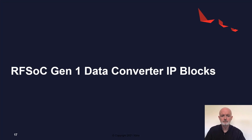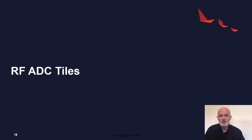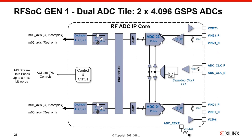We will begin our investigation with the data converter blocks in the RFSOC Gen 1 devices, starting with the RF-ADC tiles. These tiles include not just the analog-to-digital converters but also many critical digital signal processing blocks. The first tile is the quad-ADC tile, which has four RF-ADCs that can sample at 2.05 gigasamples per second. A part with 16 ADCs would use four of these quad-ADC tiles.